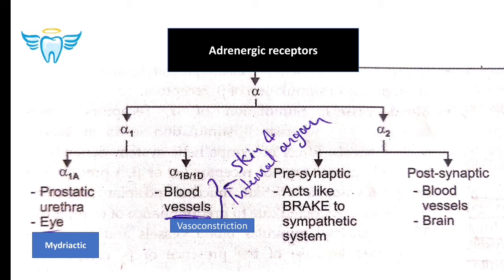Talking about alpha-2 receptors: on the pre-synaptic site they act like a brake to the sympathetic system. On the post-synaptic site they act on blood vessels causing vasoconstriction, and they are also present in the brain.